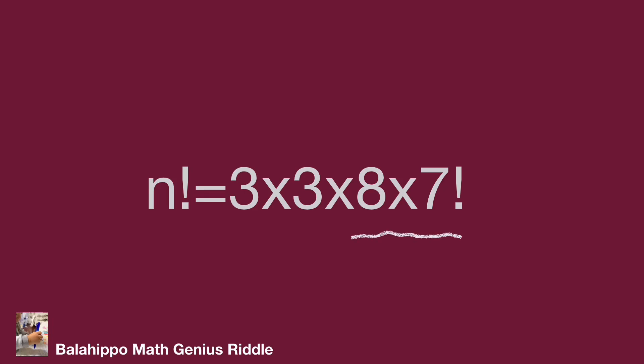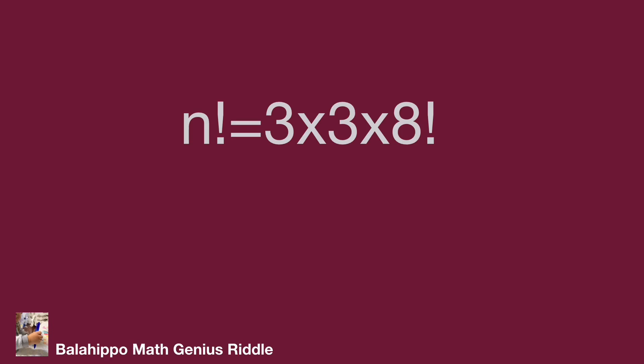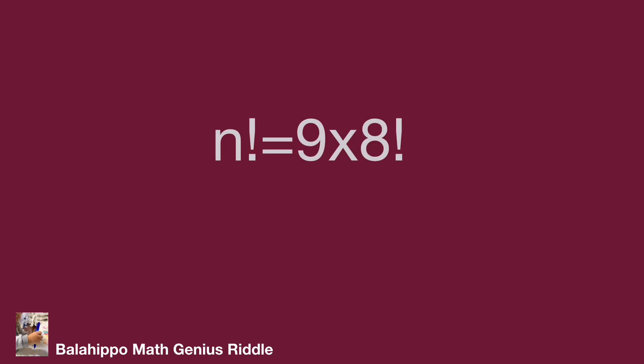Now from 8 factorial, find the factor 9 in this equation. It will become a larger factorial number. 3 times 3 equals 9, so the equation is n factorial equals 9 times 8 factorial. 9 times 8 factorial equals 9 factorial.